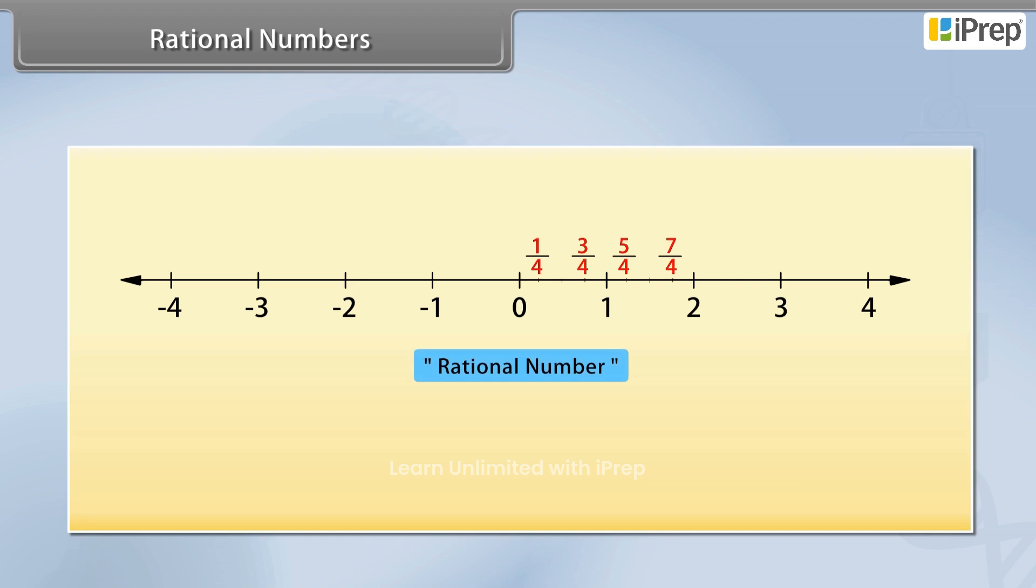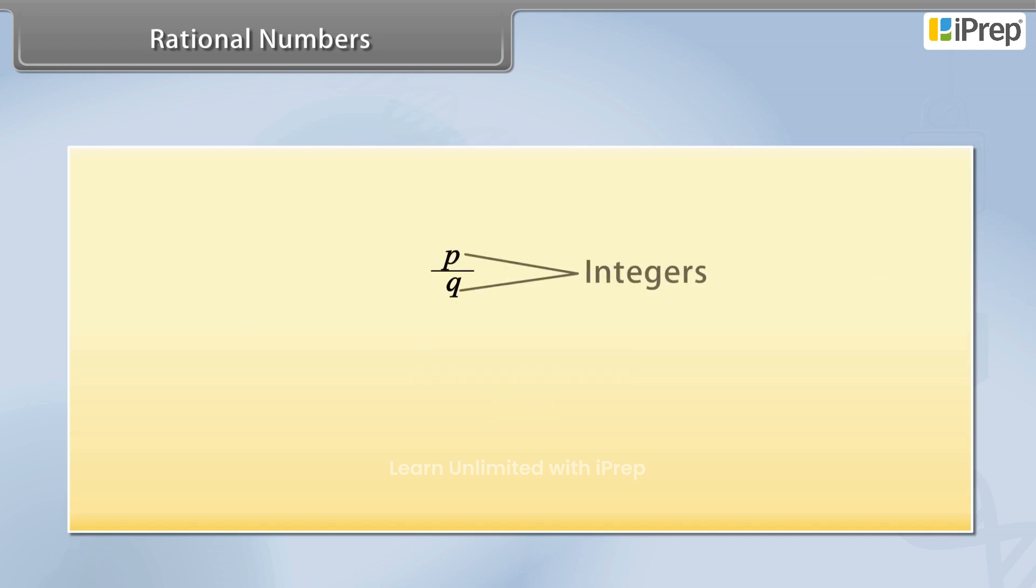Rational Numbers are denoted by the symbol Q. Rational Numbers are written in the form P by Q where P and Q are integers and Q is not equal to 0.